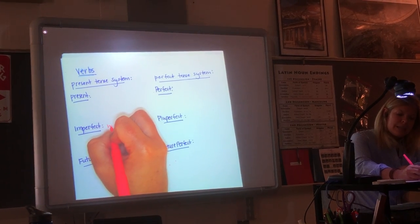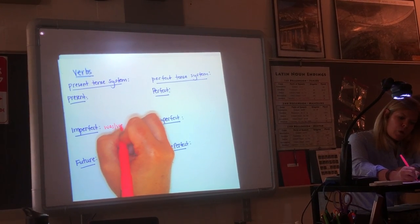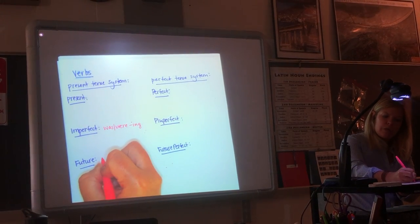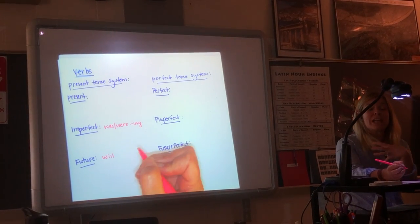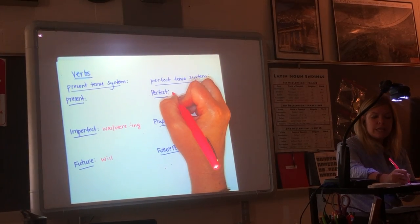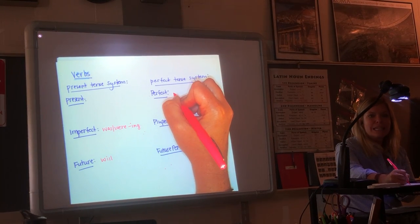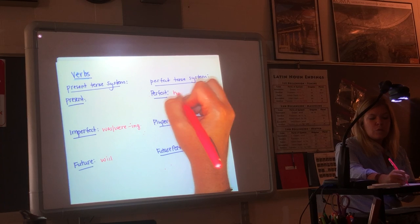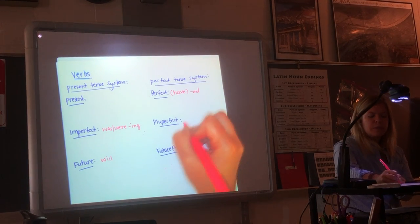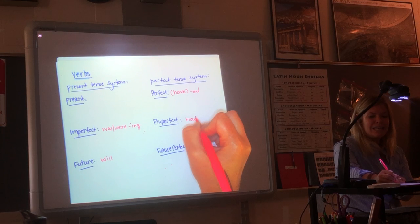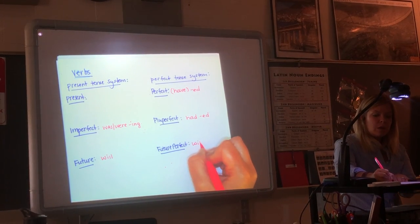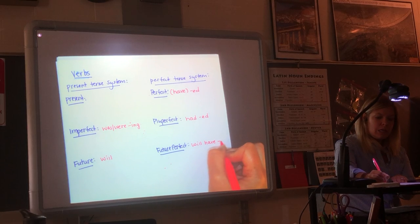So remember the present just translates in the present. The imperfect, as that was or were being. The future always translates as will. The perfect tense always ends in -ed. The word have is optional for perfect. Pluperfect, had -ed. And future perfect, will have -ed.